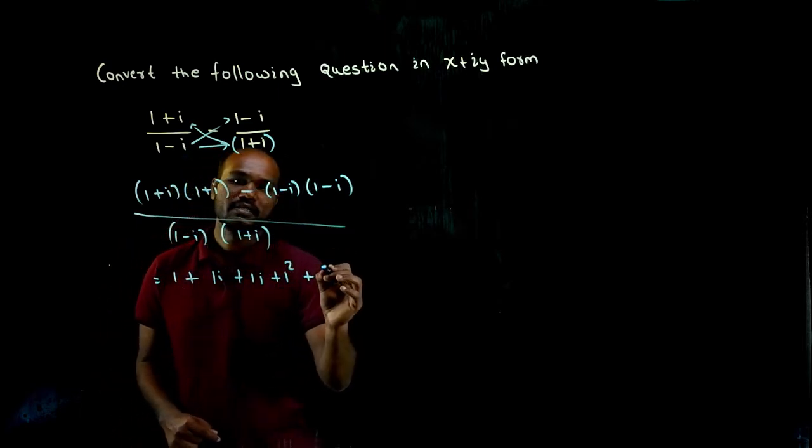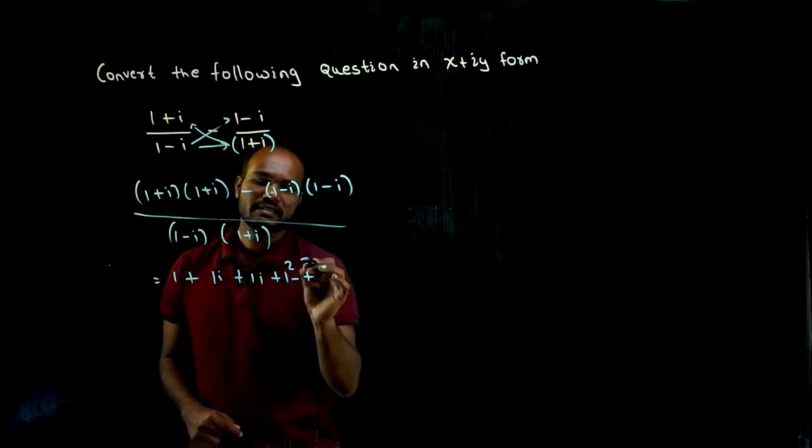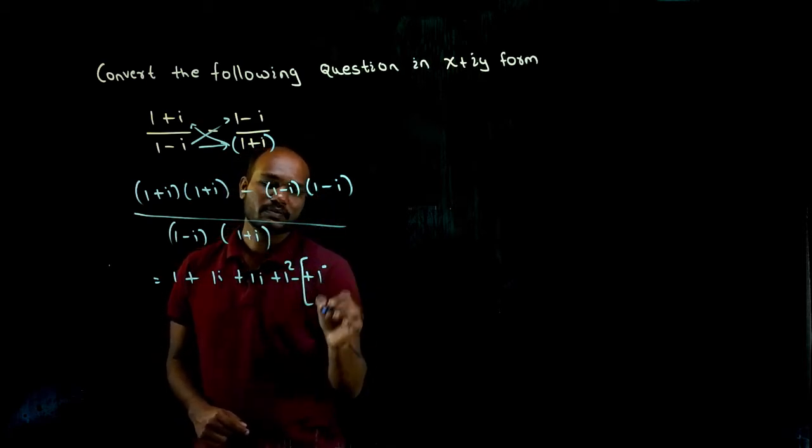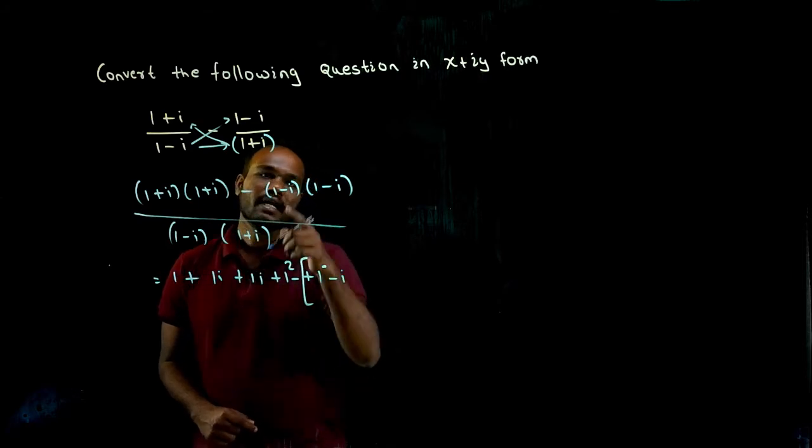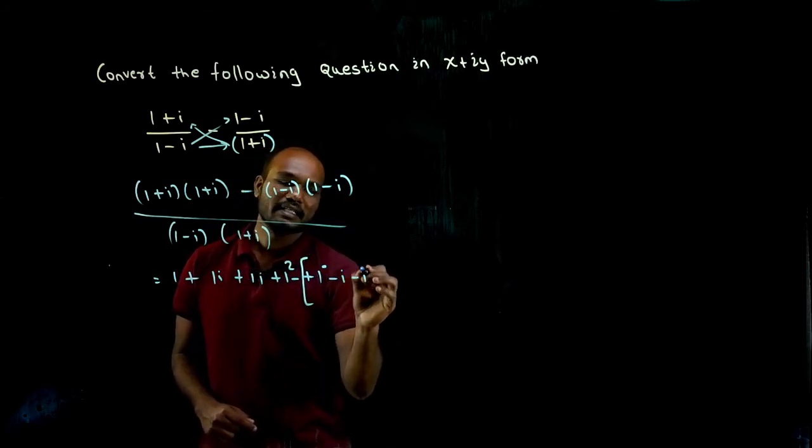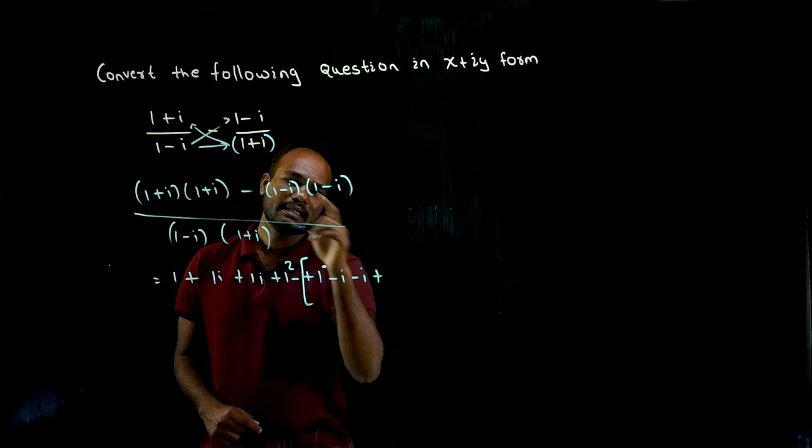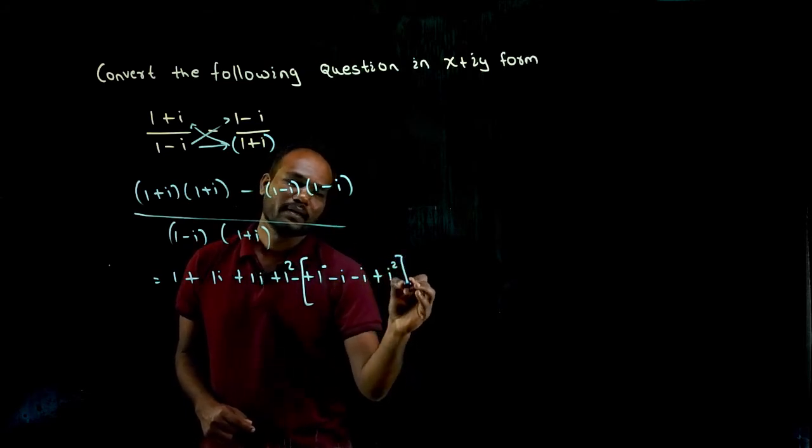In the same way, I can just write it - it is a minus. So 1 into 1 is plus 1, 1 into minus is minus 1i, and again minus 1i is minus i, minus into minus is plus, i into i is i square, right?